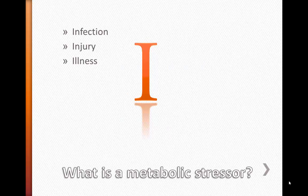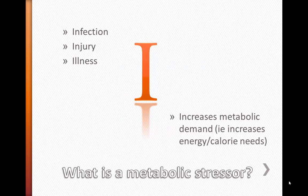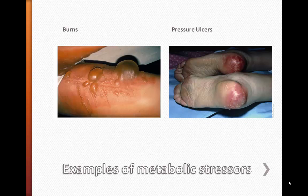What makes the metabolic stressor is that the physical demand on the body increases the metabolic needs. In other words, the stress on the body increases energy or calorie needs. Examples of stressors include burns, fractures, surgery, infections, and wounds. The picture on the right shows wounds that are associated with being bedridden. Constant pressure at points on the body prevents blood flow in those areas, which leads to tissue breakdown, resulting in ulcers or wounds.